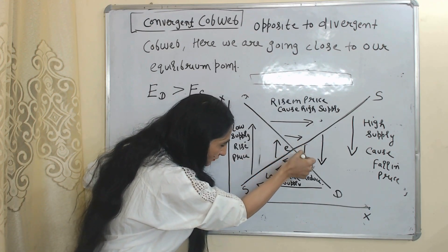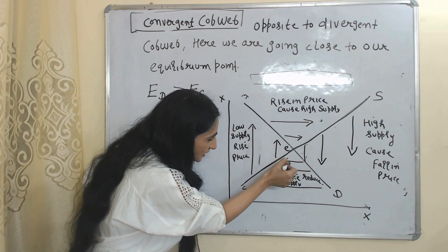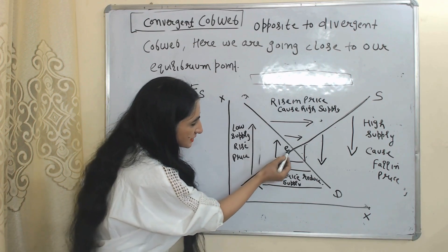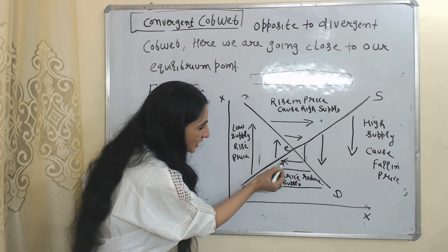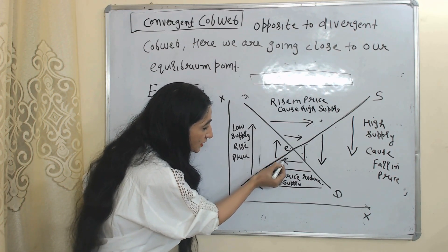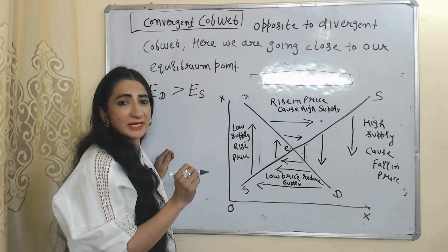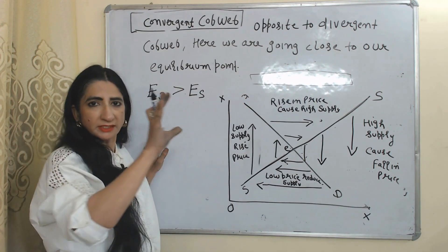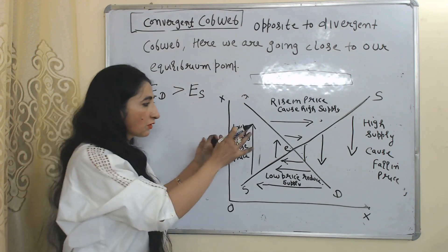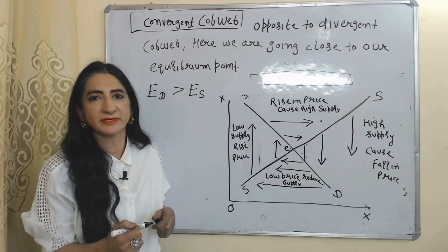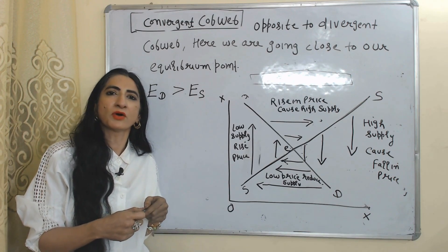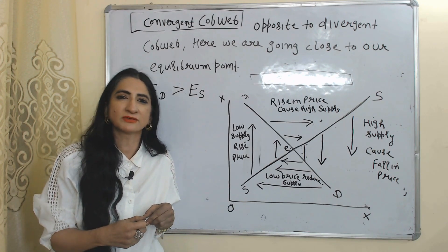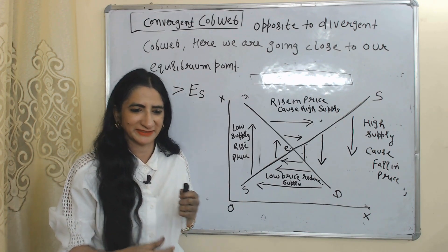We continue moving — here, then above, then here, then here — and finally we reach the equilibrium point. You can see this is our equilibrium point and we are very close to it. This is called a convergent cobweb, where we come close to our equilibrium point. So this is all about the Cobweb model. I think you got it. Thank you so much for watching this video. Bye, take care.